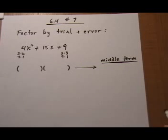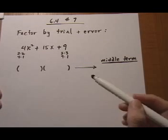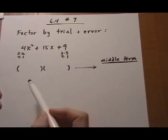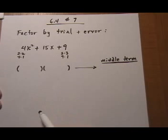6.4 number 7. Here we have a trinomial that we want to factor, 4x² + 15x + 9. And instead of factoring it by grouping like the last section, we're going to factor it by trial and error. So we're just going to basically list a bunch of different binomials and just see which one works.